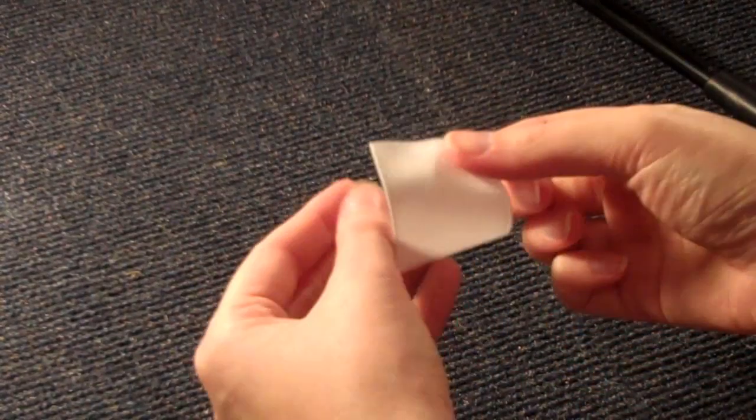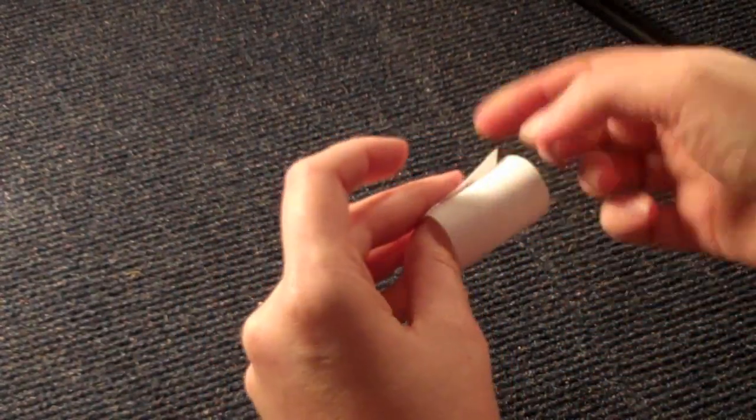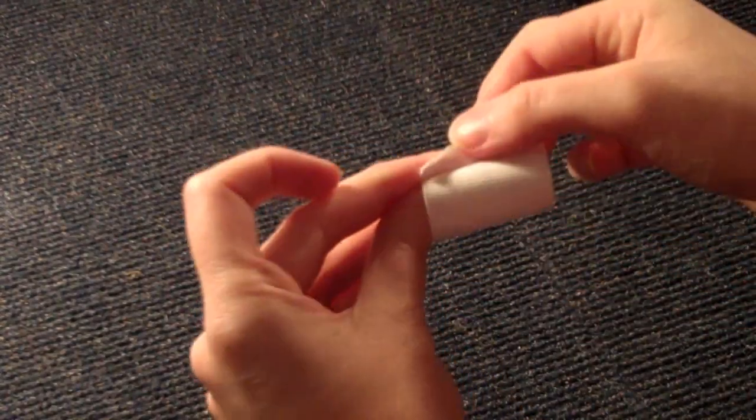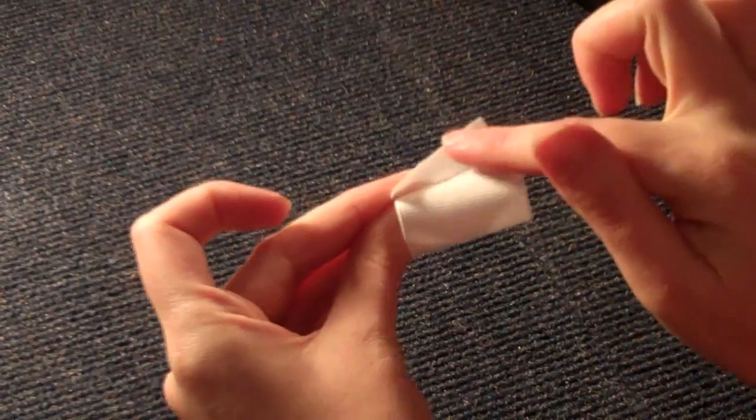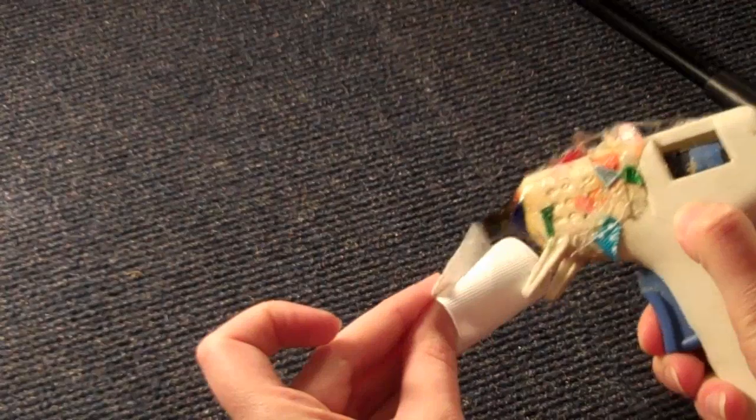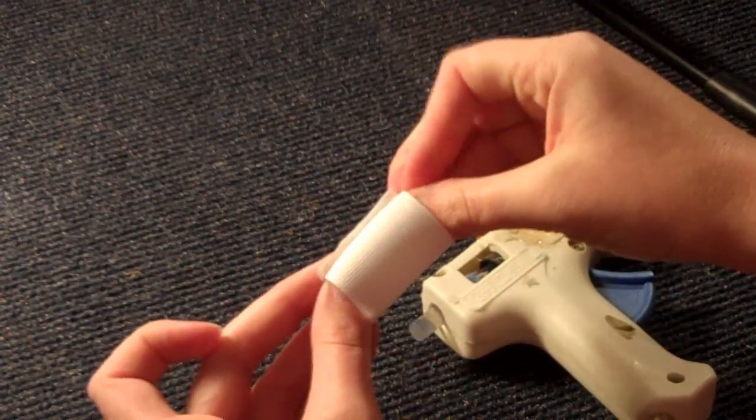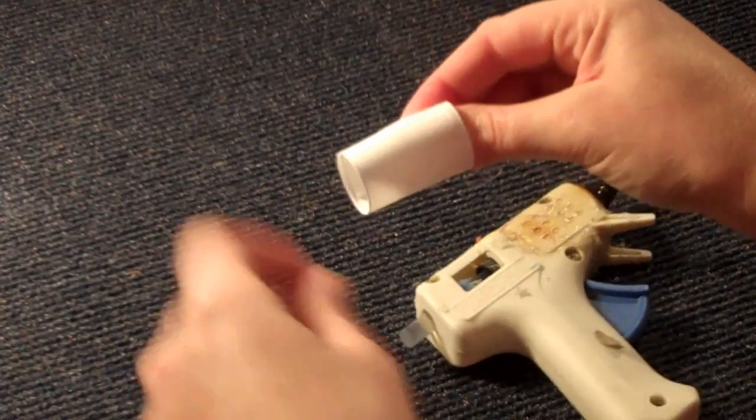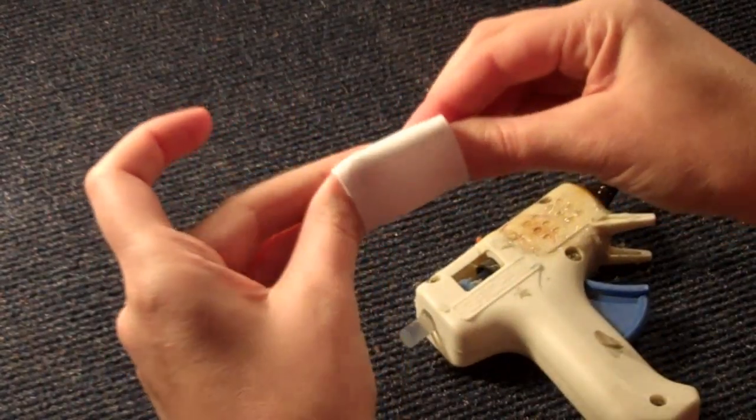So what we're going to do is we're just going to fold it up into like a circle or a cylinder. Then we're going to put our hot glue right here at the edge to seal it. Just a little bit.